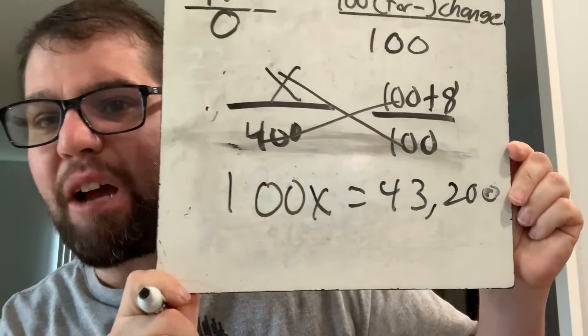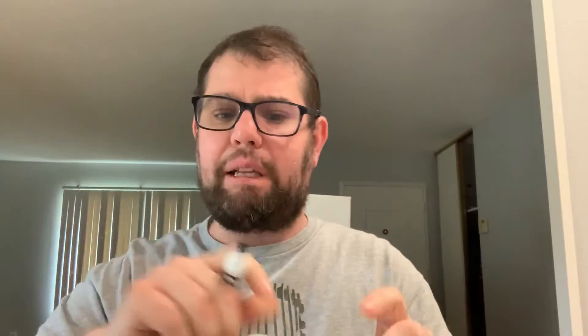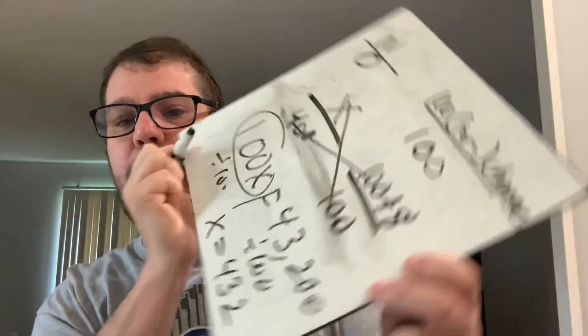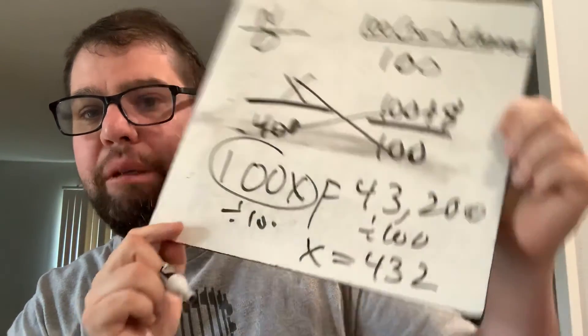Again, use the calculator — don't be afraid, use it and get it right. I use the line-circle-cover method and divide. I divide by 100 and I get 432 as my final answer. I hope these two extra examples help you. Come on Zoom if you need more help — bye!